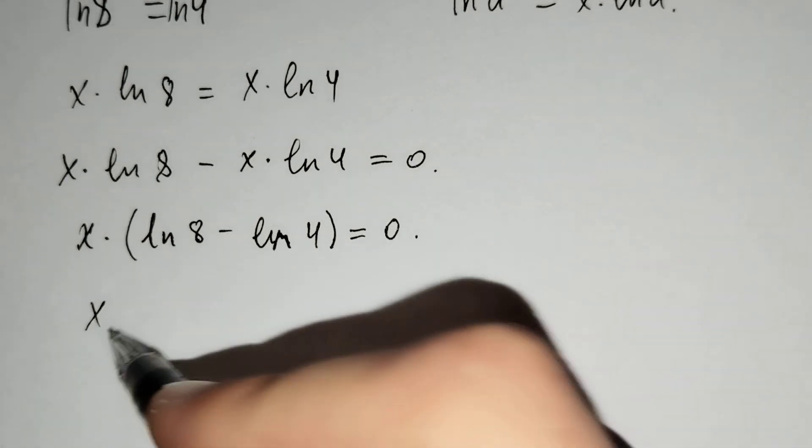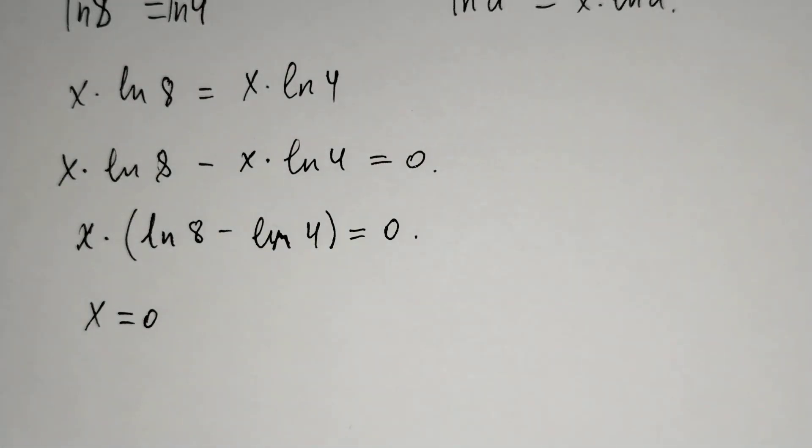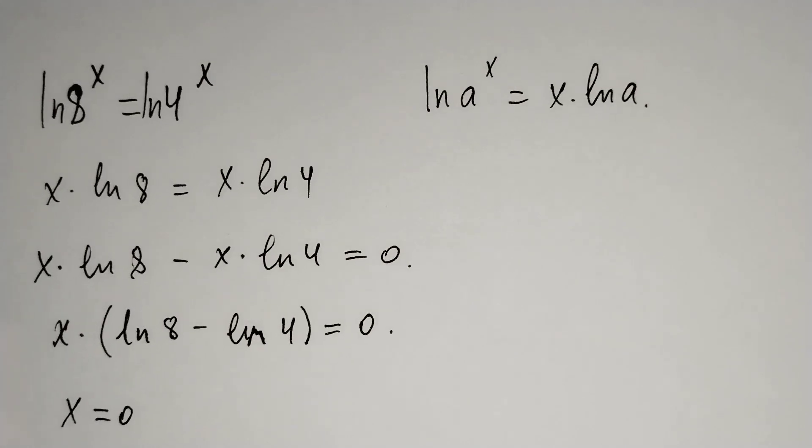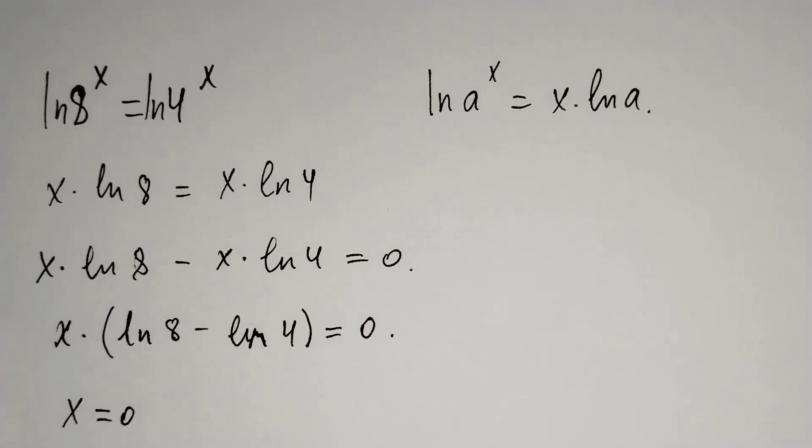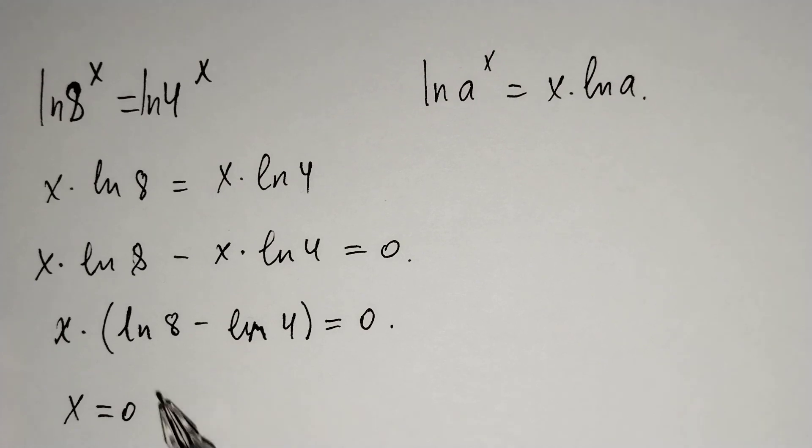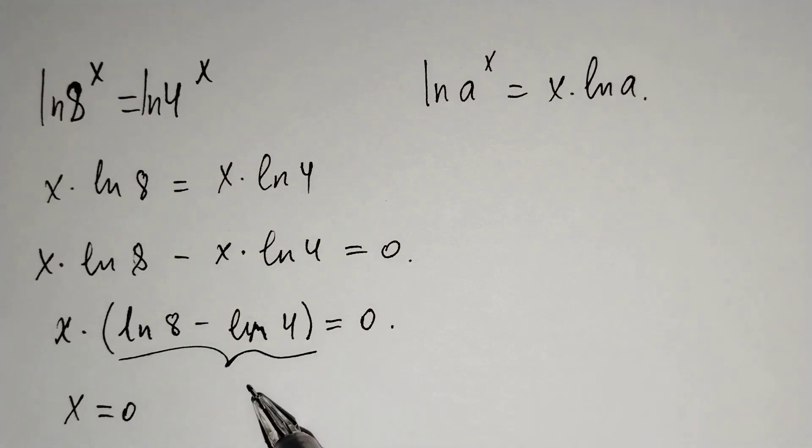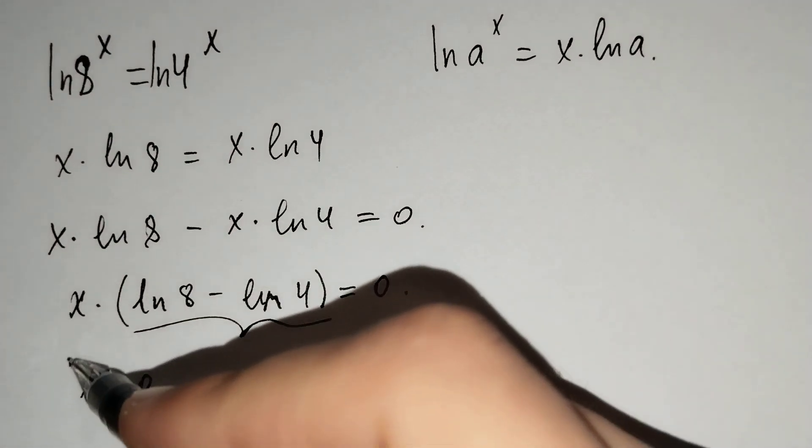Why? Because for the product to be zero, at least one of the multipliers must be equal to zero. If this is not equal to zero, then x should equal zero. This is our answer.